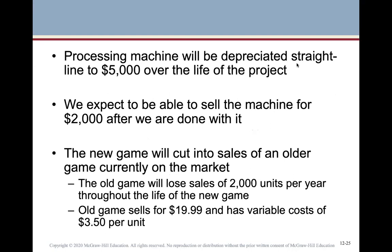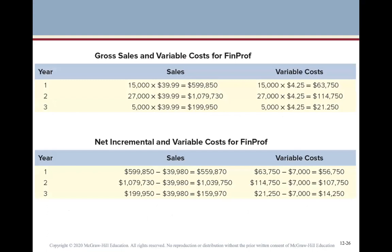The processing machine is straight-line depreciated over the life of the project and will have a book value of $5,000 when the project is finished. We expect to sell the machine for $2,000 after we're done, so the market value and book value are quite different. The new game will also decrease sales of an older game currently on the market by 2,000 units per year throughout the life of the new game. The old game sells for $19.99 with variable costs of $3.50 per unit.